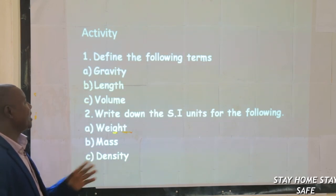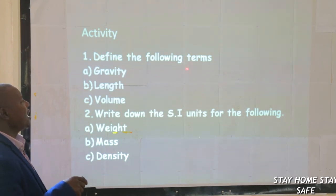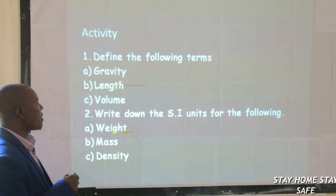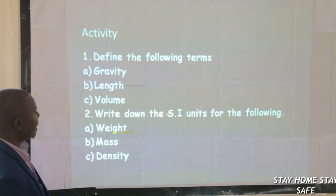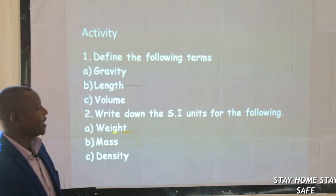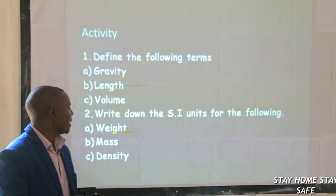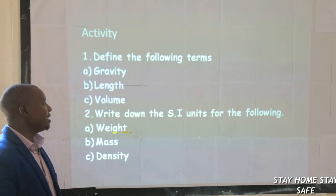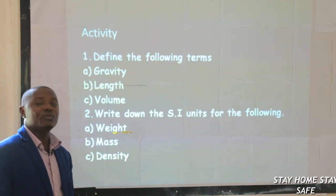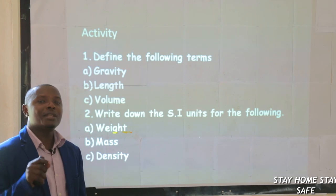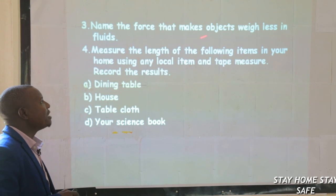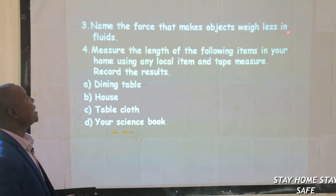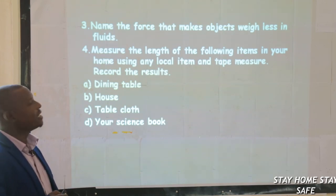My activity here is: define the following terms — gravity, length, volume. Then two: write down the SI units for measuring the following — weight, mass, and density. What is SI in full? Standard units. They want standard units for measuring those. Then number three: name the force that makes objects weigh less when placed in fluids.